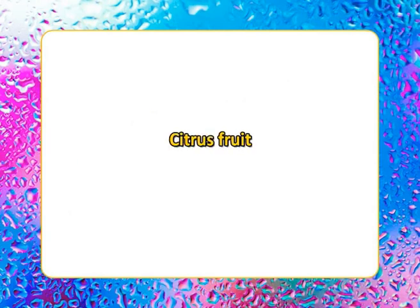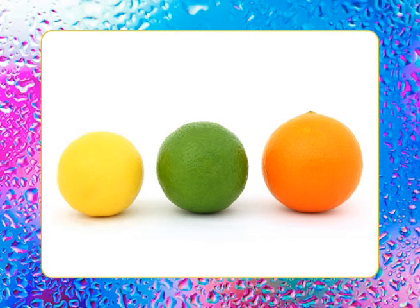Citrus fruits belong to the genus Citrus, which contains about 16 species of evergreen aromatic shrubs and trees, mostly with thorny branches, distributed throughout the tropical and subtropical regions of the world. The common citrus fruits are orange, lemon, and lime. Their bright color, pleasing flavor, and sweetness make them a favorite fruit. They are served as juice and can also be eaten raw.